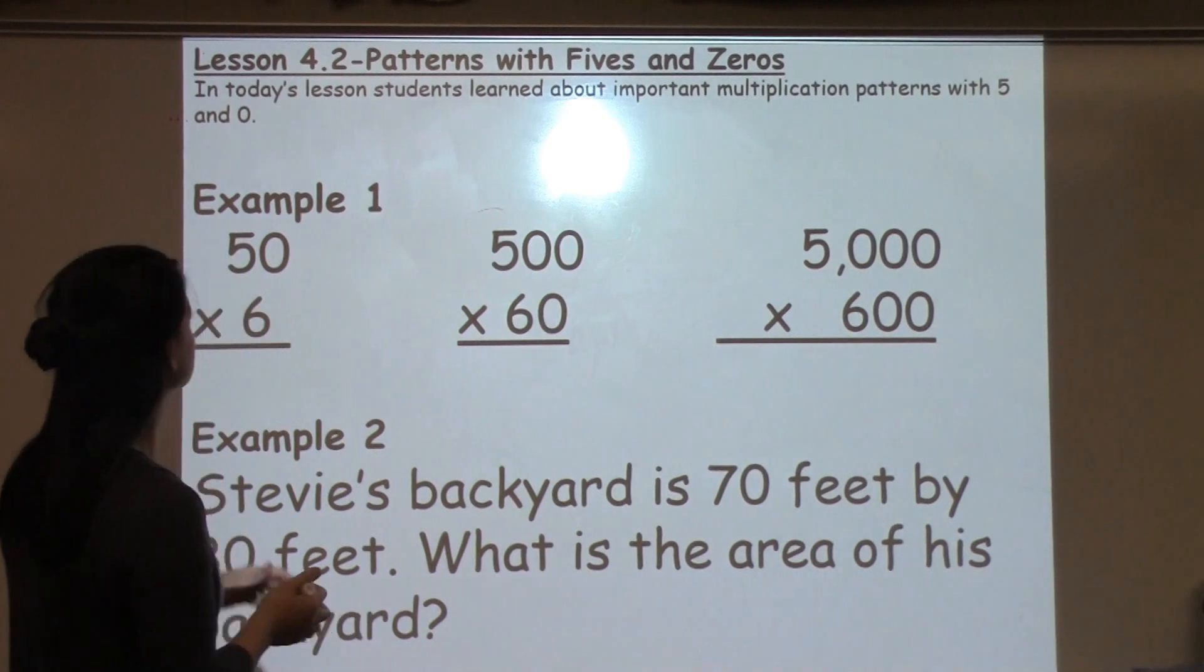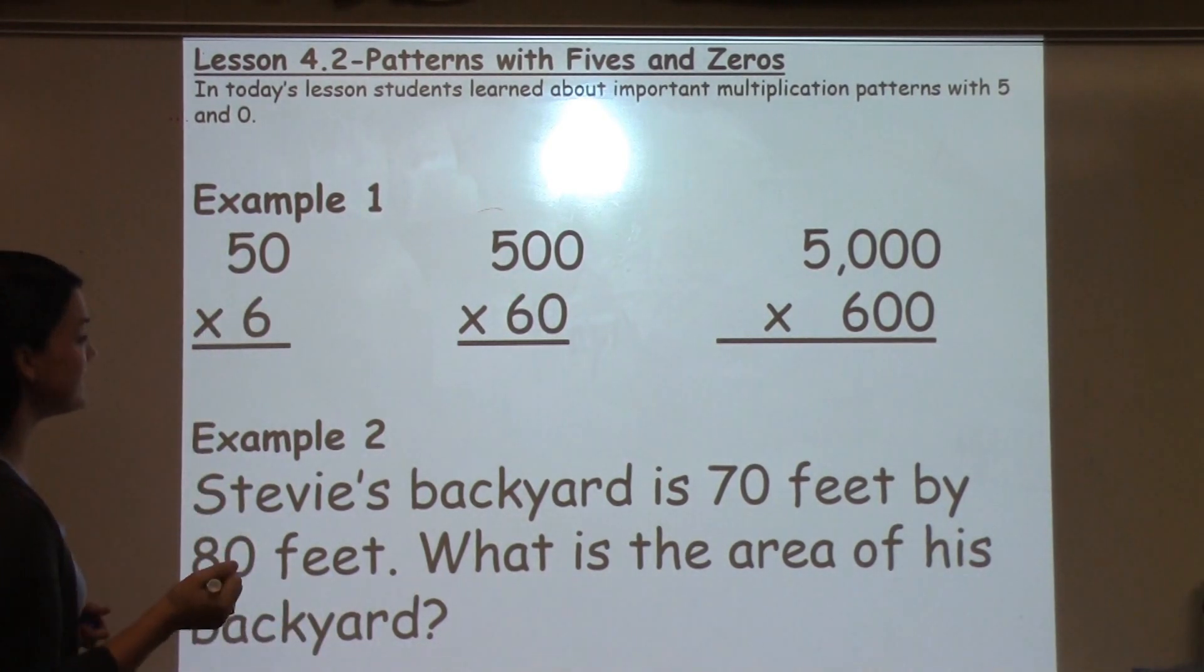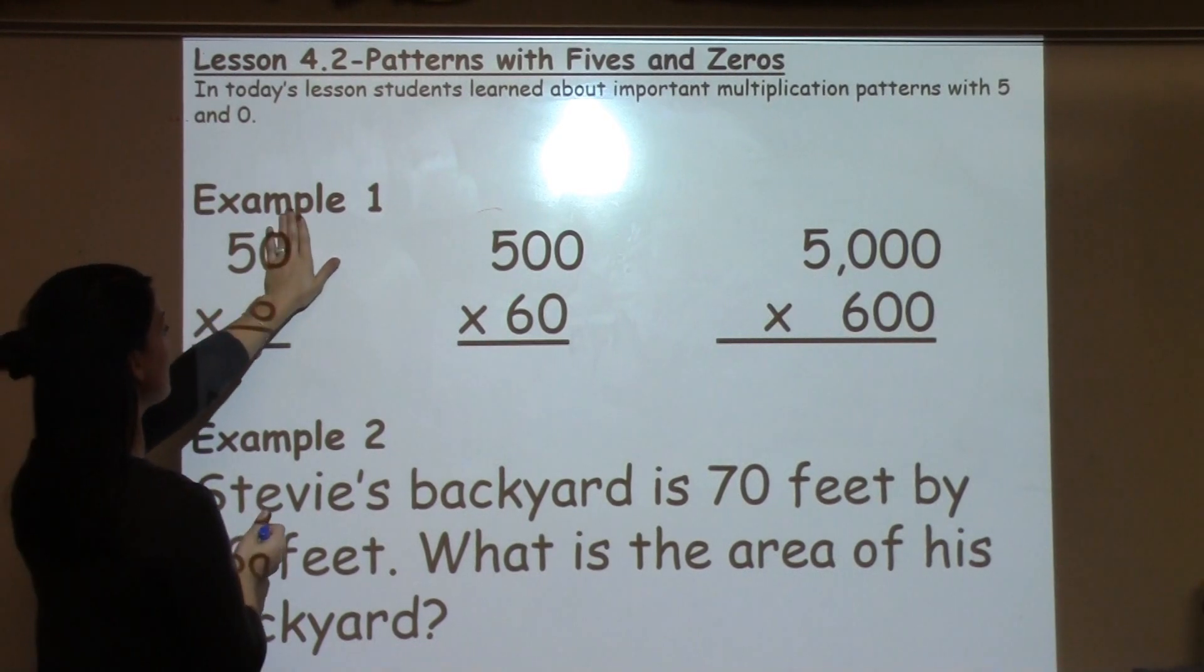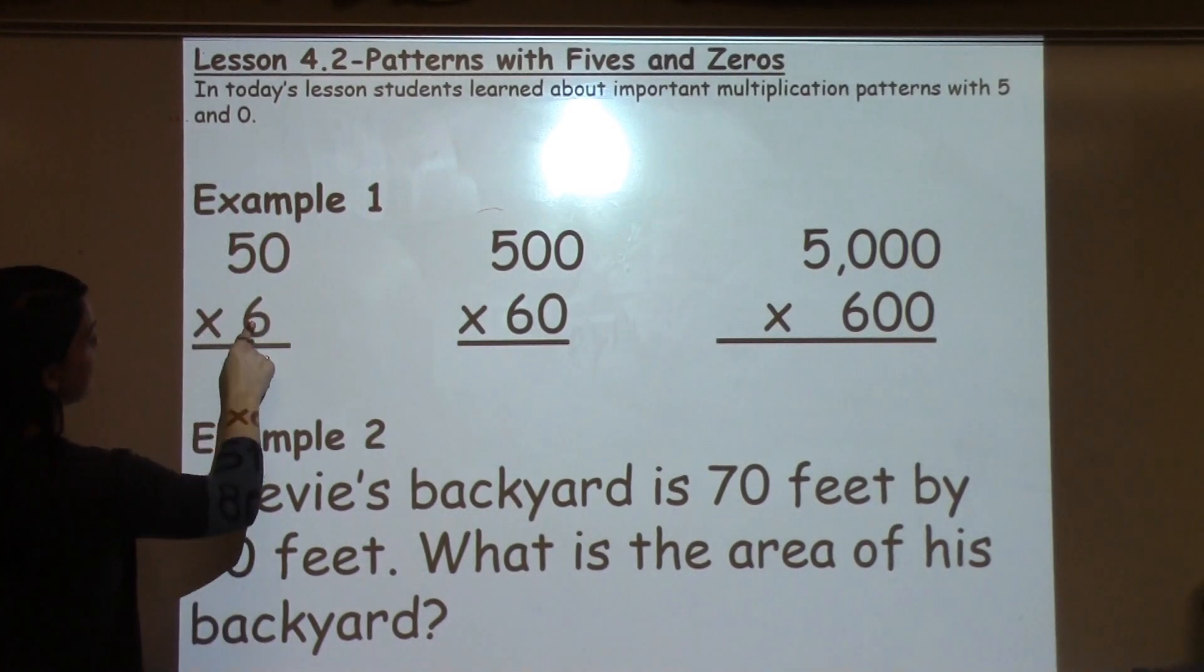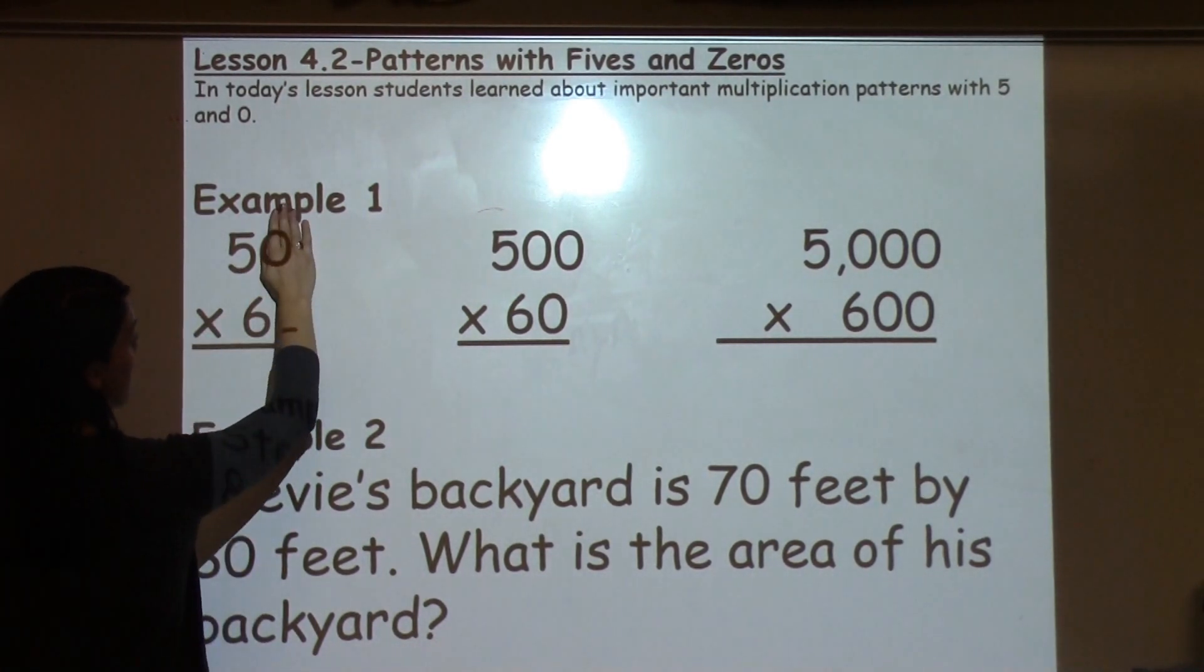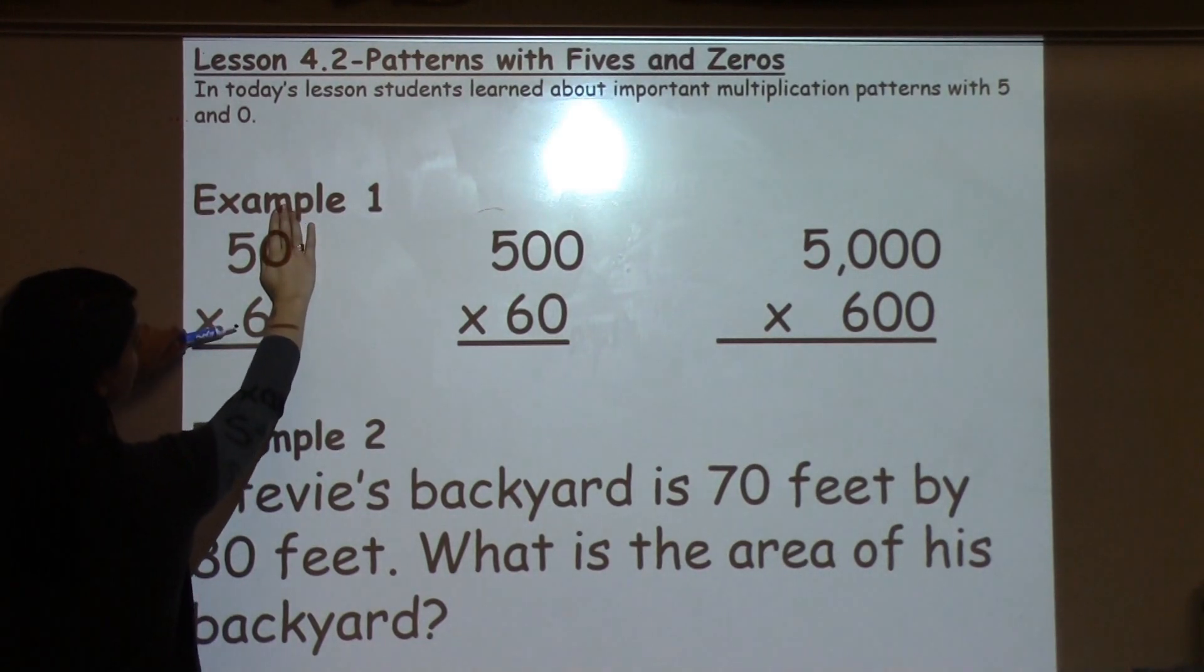Let's take a look at some examples. The first one says 50 times 6. Students learned to take the 0 off and just multiply the numbers that you see that are not 0s. So we're going to take 5 times 6.